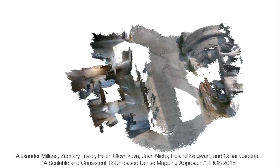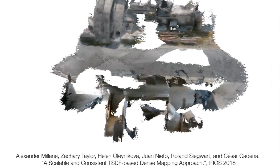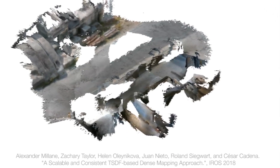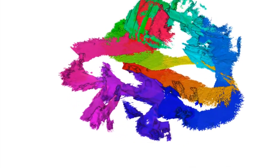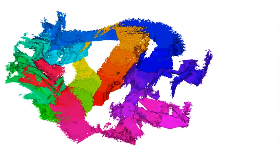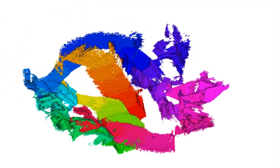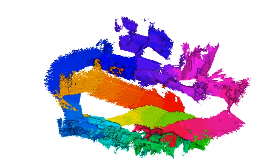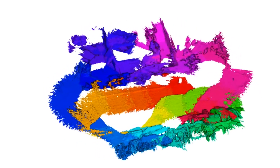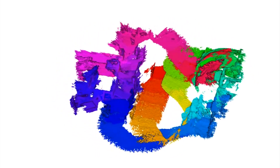The first stage in our pipeline is to create an initial map of the environment from an inspection flight. Here we show a reconstruction resulting from a single flight through both indoor and outdoor spaces, which was built in real time. The world is represented as a collection of smaller submaps, whose positions and orientations are adjusted as the system acquires more information about its environment.